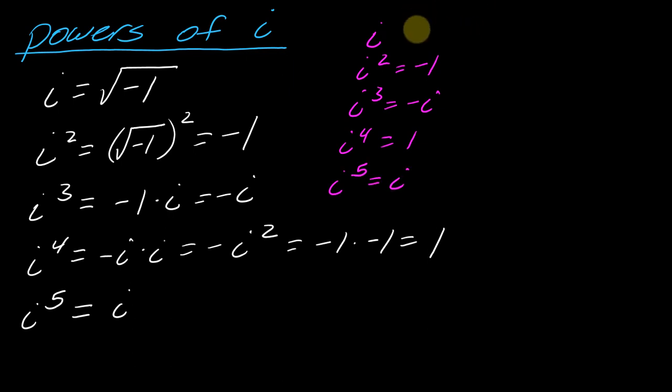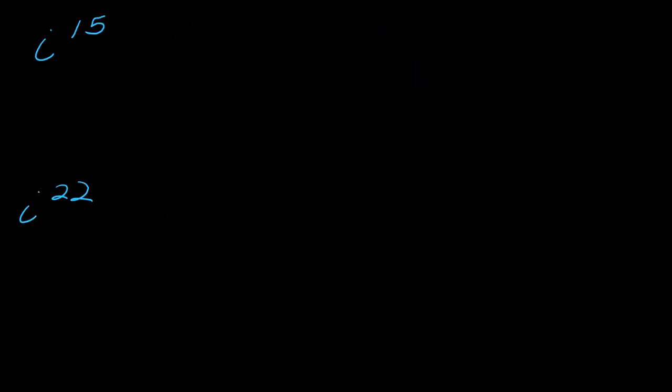So if you look at this, this actually is a little cycle here that will continue on. If I went to something like i to the sixth, well, now I'm just going to start the pattern over again. So i to the sixth equals negative 1, i to the seventh equals negative i, i to the eighth equals 1, and then we start the cycle over again. This is kind of a special thing about i that the powers just repeat. That's why we can evaluate really ridiculous powers of this.